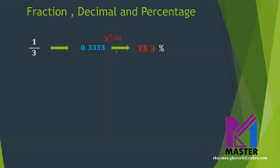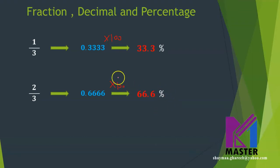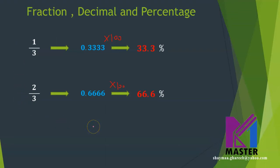So one third will be 33.3%. What about two thirds? If one third equals 0.33333 forever, then two thirds will be 0.6666 forever. In order to change it into a percentage, I multiply it by 100, so it will be 66.6%. These two fractions are very important to know by heart. Please study all the fractions in this video.